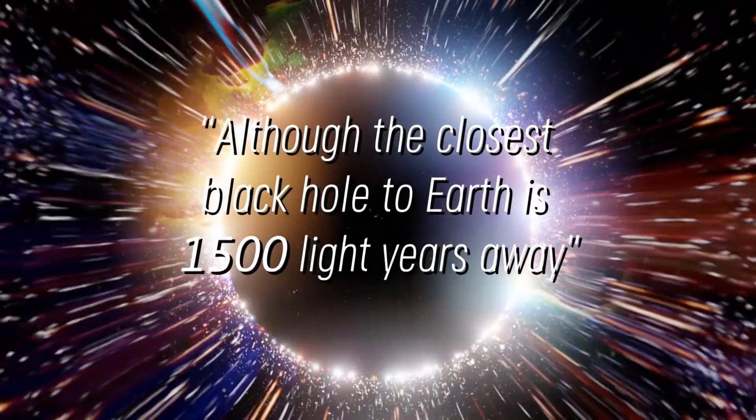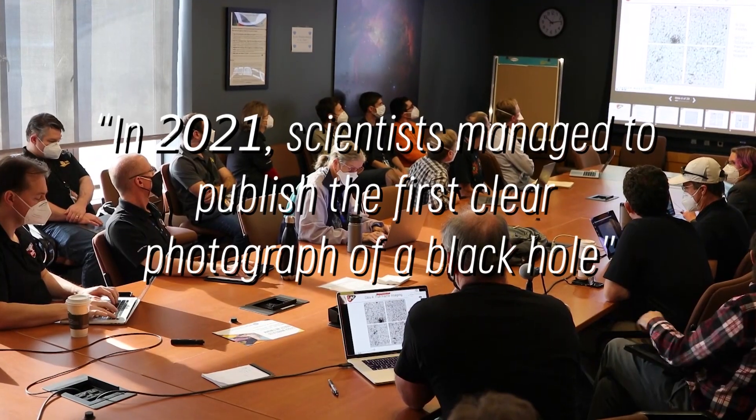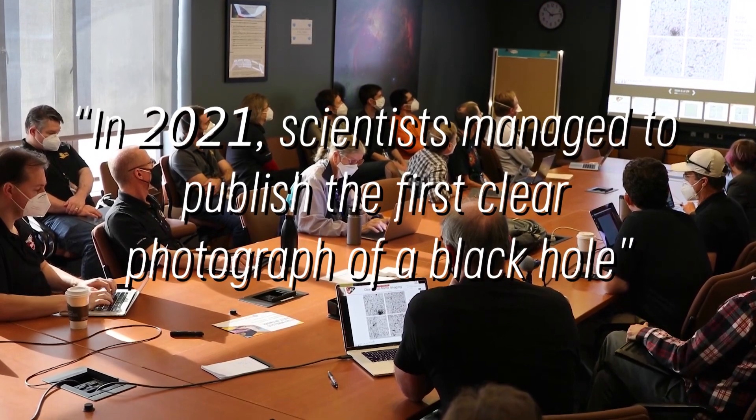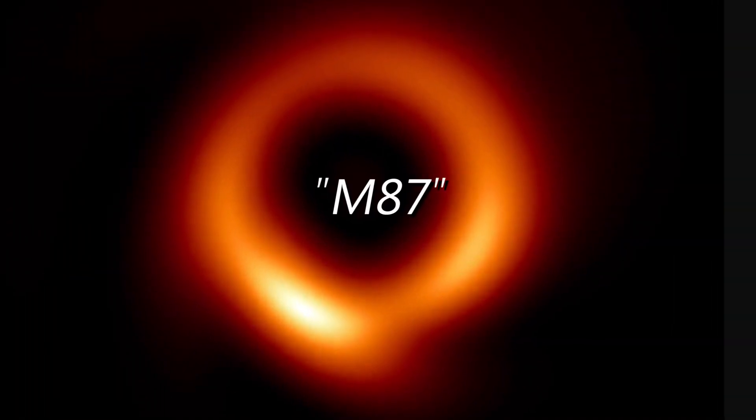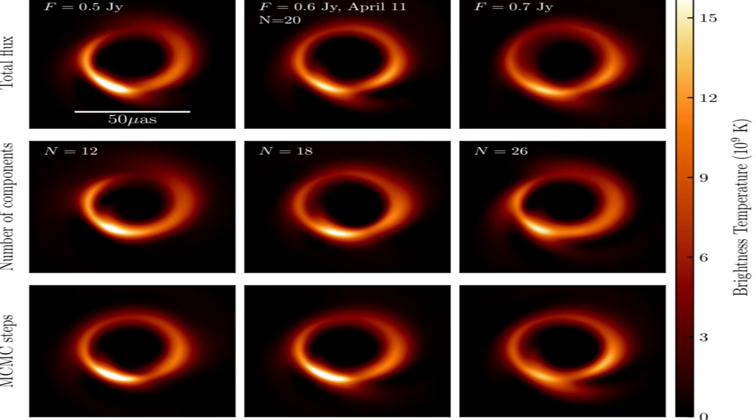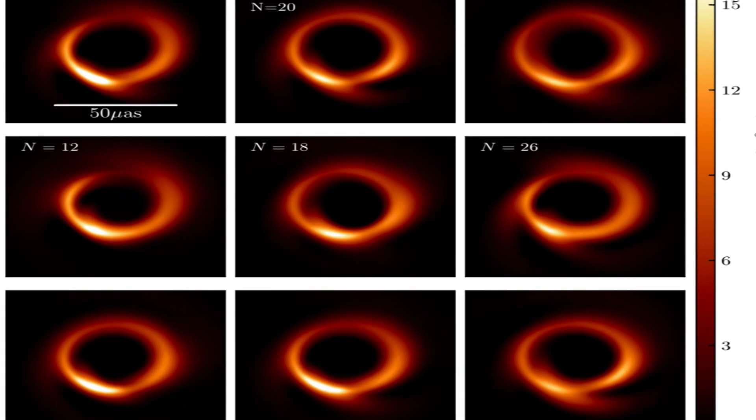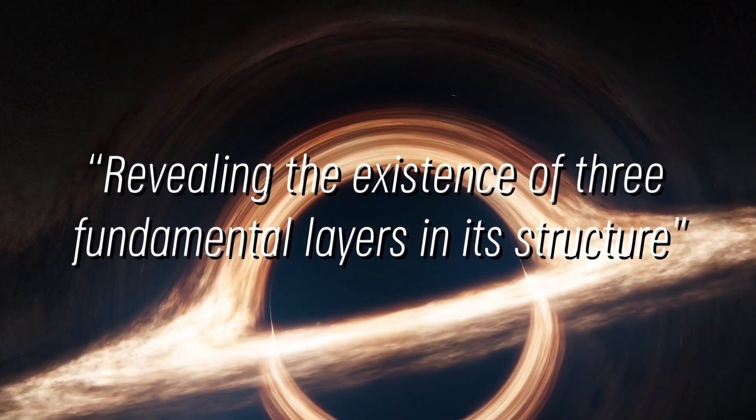Although the closest black hole to Earth is 1500 light years away, this information still raises the question of whether black holes can actually swallow the Earth whole. In 2021, scientists managed to publish the first clear photograph of a black hole, specifically the black hole M87. The black hole was photographed for several nights in a row, and with each image, researchers collected more and more evidence about it, revealing the existence of three fundamental layers in its structure.